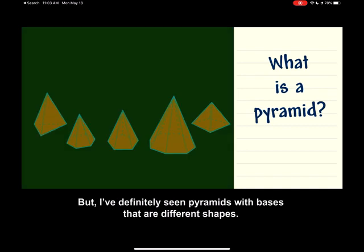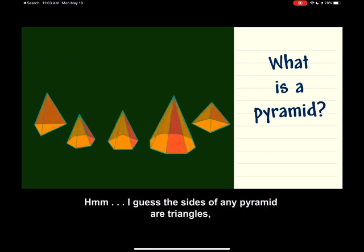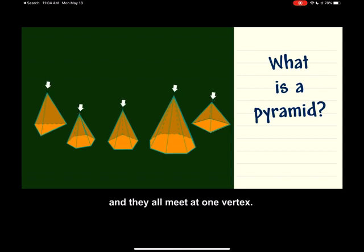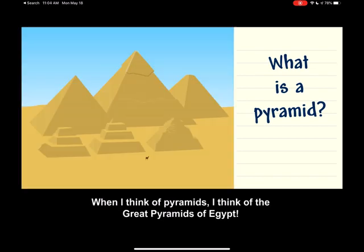The base of this pyramid is square. But I've definitely seen pyramids with bases that are different shapes. I guess the sides of any pyramid are triangles, and they all meet at one vertex. When I think of pyramids, I think of the Great Pyramids of Egypt.